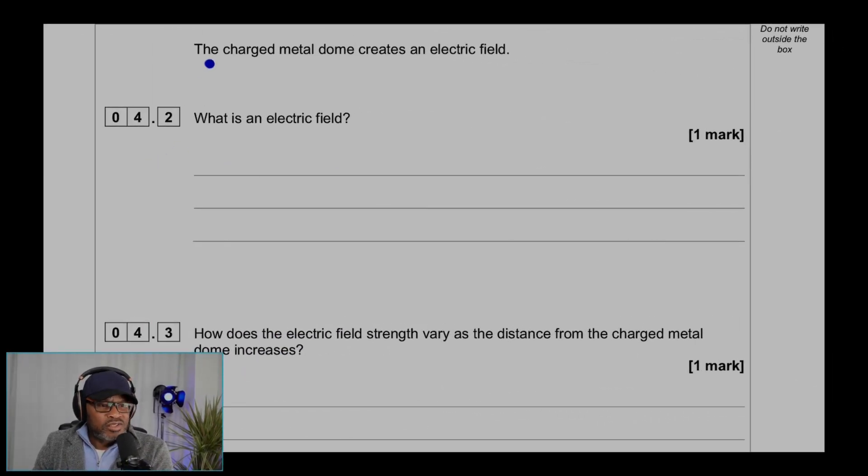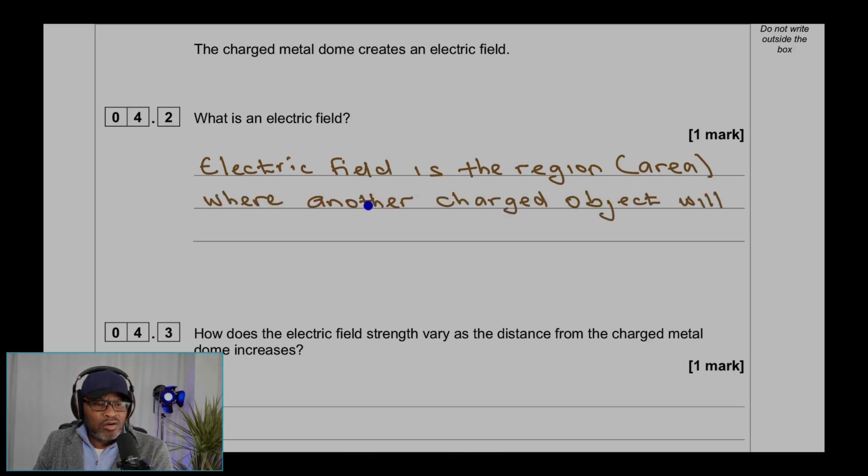Question 4.2. The charged metal dome creates an electric field. What is an electric field? An electric field is the region or area where another charged object will experience an electric force.